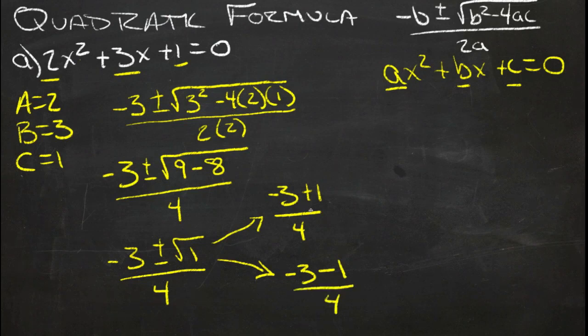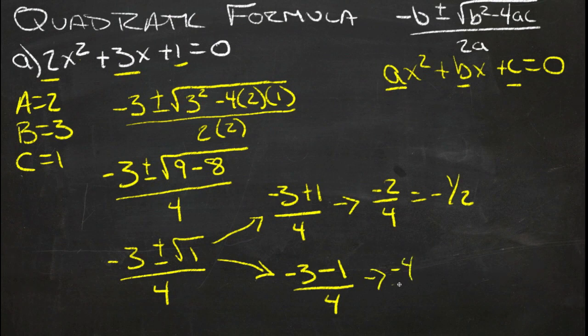So if we have negative 3 plus 1 over 4, that gives us negative 2 over 4, which is negative 1 half. And then if we have negative 3 minus 1 over 4, we get negative 4 over 4, which is negative 1.